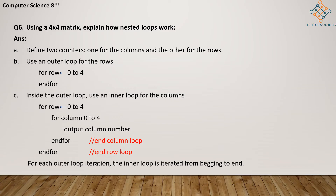For each outer loop iteration, the inner loop is iterated from beginning to end. So when the row value is zero, the inner column loop runs from zero to four. When the row value becomes one, the inner loop again runs from zero to four. When the row value is two, the same process continues — and this keeps going until the outer loop ends.